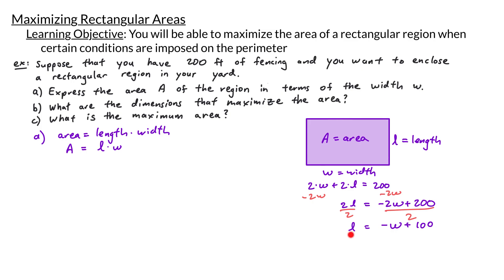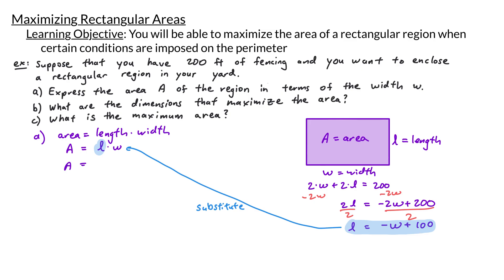Now that we have L in terms of W, we can make a substitution. Replacing L in our area equation with negative W plus 100, we get area equals negative W plus 100 times W. Distributing the W inside the parentheses gives us area equals negative W squared plus 100W.